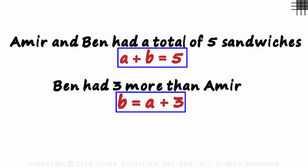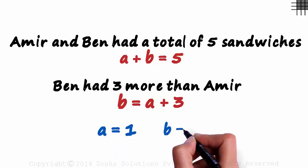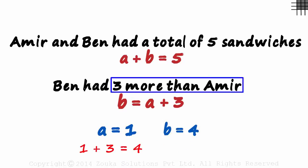Now can we tell the exact number of sandwiches each of them had? Yes. Based on both these equations, we can say that Aamir had one sandwich and Ben had four. Three more than Aamir and the total is five sandwiches.